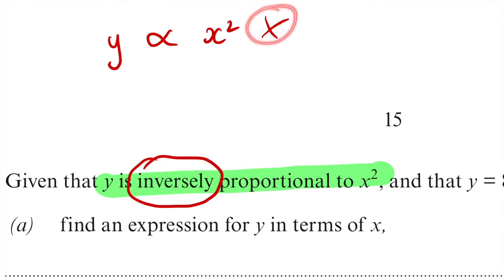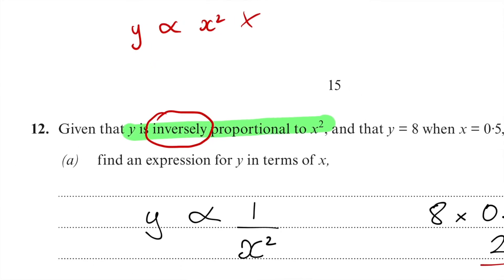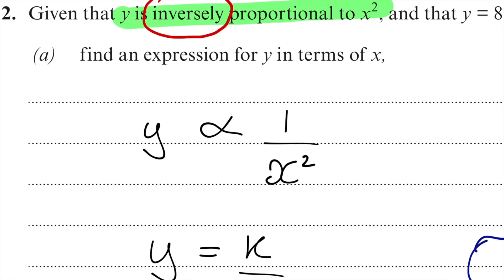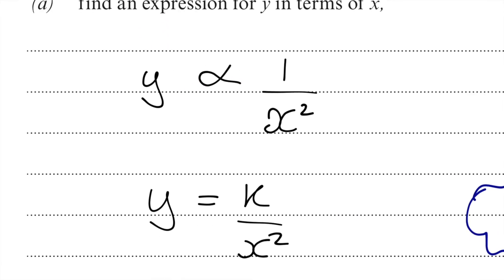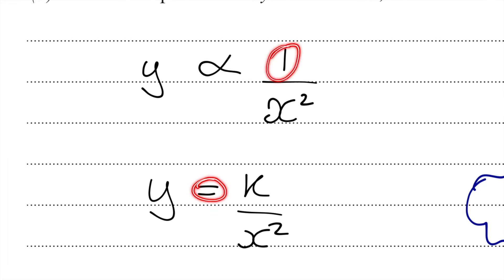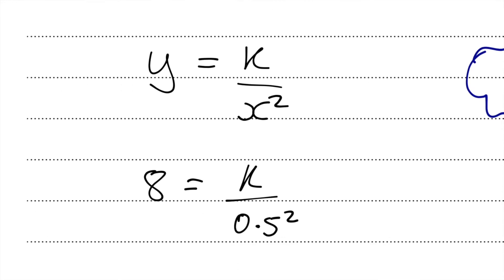The next thing I'm going to do is change this proportionality sign straight to an equals, and then the 1 is going to change to k. Now there's no reason why you can't skip straight to this line here. You don't need to do this one, even though it's correct. I like to write it in, but you can skip straight to this one.